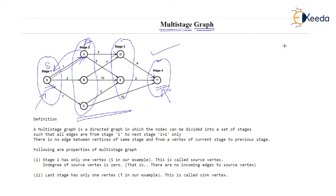Reverse edges are not allowed as far as stages are concerned. Also, an edge can exist only between stage I to stage I plus 1, that is previous stage to next stage. We cannot have an edge from stage I to some vertex of stage III. If an edge exists, it must be present between stage I to stage I plus 1.